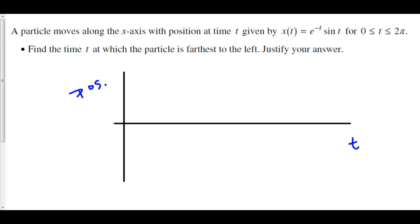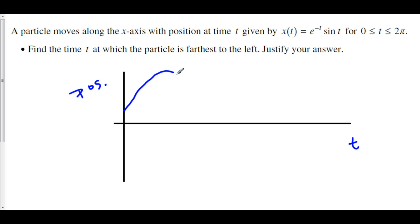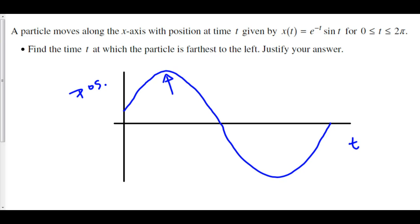Consider a position graph. The positive position will be to the right and the negative position will be to the left. If we create any function, starting here going to positive position and then back to 0 and into negative positions — the particle was farthest to the right where velocity changes from positive to negative, because velocity is the derivative of position. The slope goes from positive to zero to negative, so position is at a max.